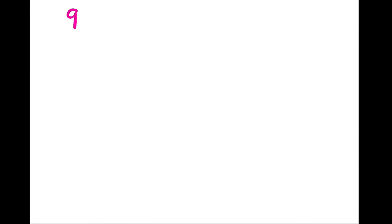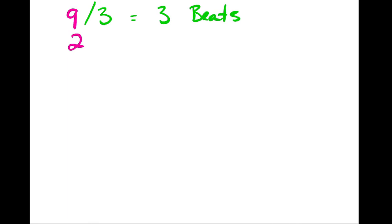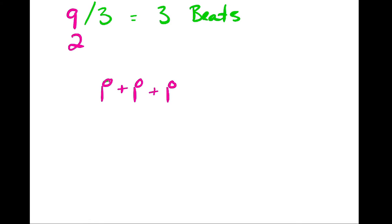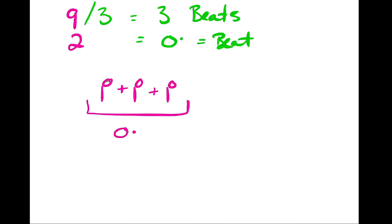Let's try 9/2. Take the top number and divide by three: nine divided by three equals three beats in the measure. The bottom number tells me the division value is a half note, so each beat is three half notes. Half plus half plus half adds up to a dotted whole note, so my beat value is a dotted whole note — three beats, each a dotted whole note. The entire measure in nine-two time would look like that.